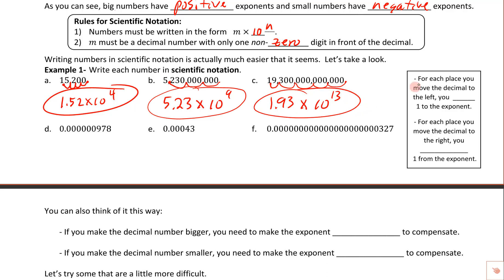For each place you move the decimal to the left when representing a big number, you add one to the exponent — starting from zero. Conversely, for each place you move the decimal to the right for smaller numbers, you subtract one from the exponent.